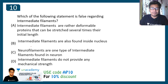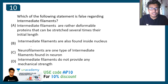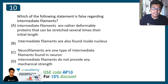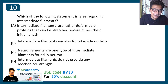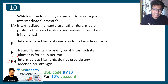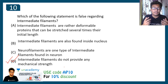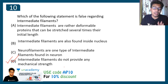The last question: which of the following statements is false regarding intermediate filaments? Option A: intermediate filaments are deformable proteins that can be stretched several times their initial length. Option B: intermediate filaments are also found inside the nucleus. Option C: neurofilaments are one type of intermediate filament found in neurons. Option D: intermediate filaments do not provide any mechanical strength. The correct answer is option D — intermediate filaments do provide mechanical strength, especially in our skin. Without them, your skin would deform under stress. They give elasticity to skin. Watch the intermediate filament video via the i button for more detail.